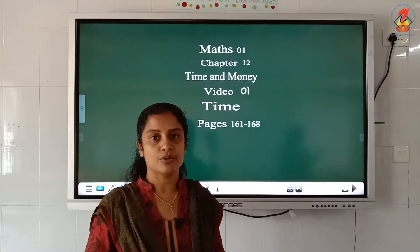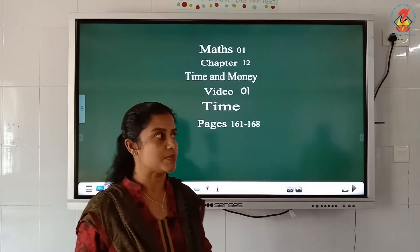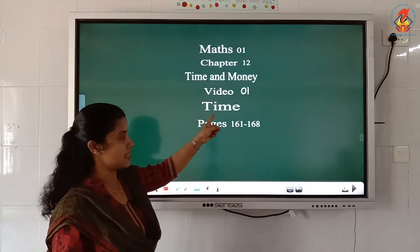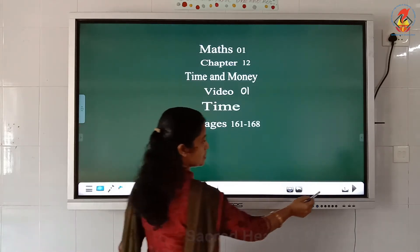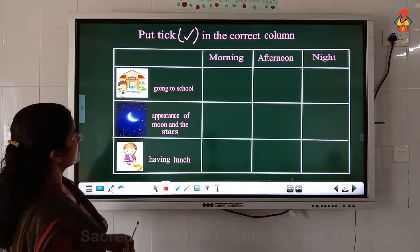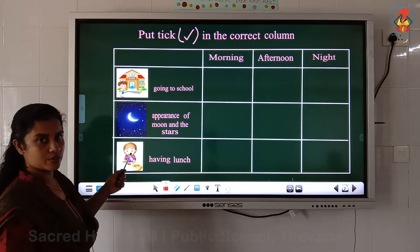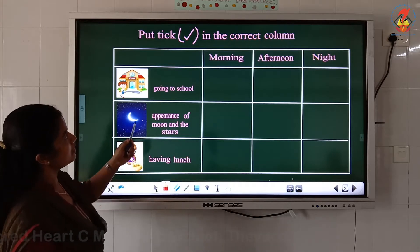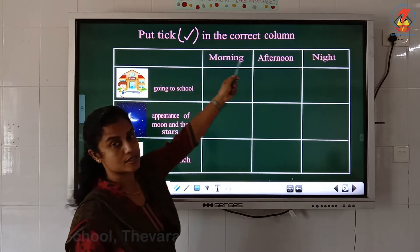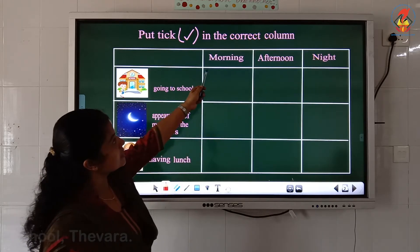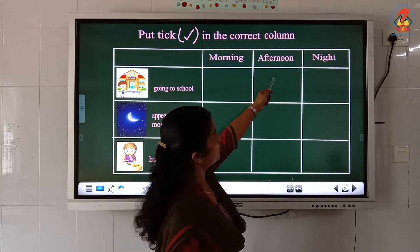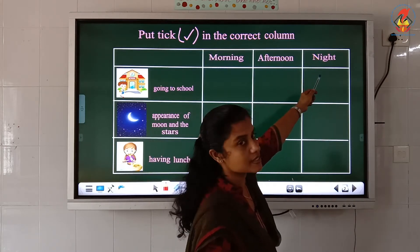Welcome children. Today we are going to start the new chapter on time and money, and today's topic is time. Look into the board, children. Here you can see some pictures on the board. What you have to do is put a tick in the correct column. In the first column it is written as morning, in the second column it is written as afternoon, and the third column is written as night.